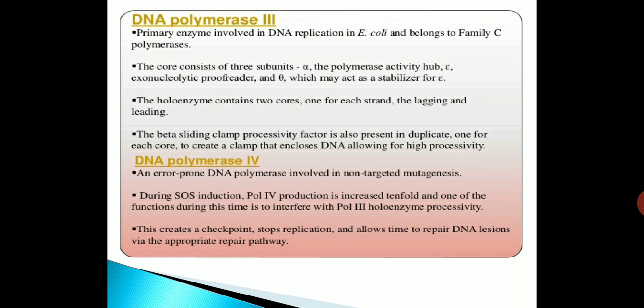DNA polymerase 3 is the primary enzyme involved in DNA replication in E. coli and belongs to the family C polymerases. Its core consists of three subunits: alpha for polymerase activity, epsilon for 3-prime to 5-prime exonuclease proofreading activity, and theta which may be a stabilizer. The holoenzyme contains two cores — one for the lagging strand and one for the leading strand. The beta sliding clamp processivity factor is also present in duplicate, one for each core, to create a clamp that encloses DNA allowing for high processivity.